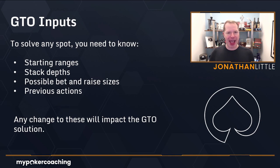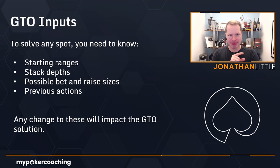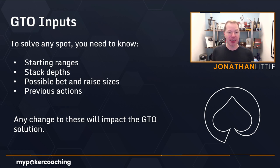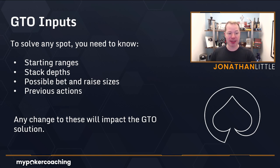Also, you need to know the action on the previous betting rounds if you're looking at the turn and the river. Because you need to know, did it go check-check on the flop, or bet-raise on the flop — whatever. That's going to heavily impact the ranges, and that will then impact the solver's output. Any change to any of these will impact the solution the GTO solver gives you.